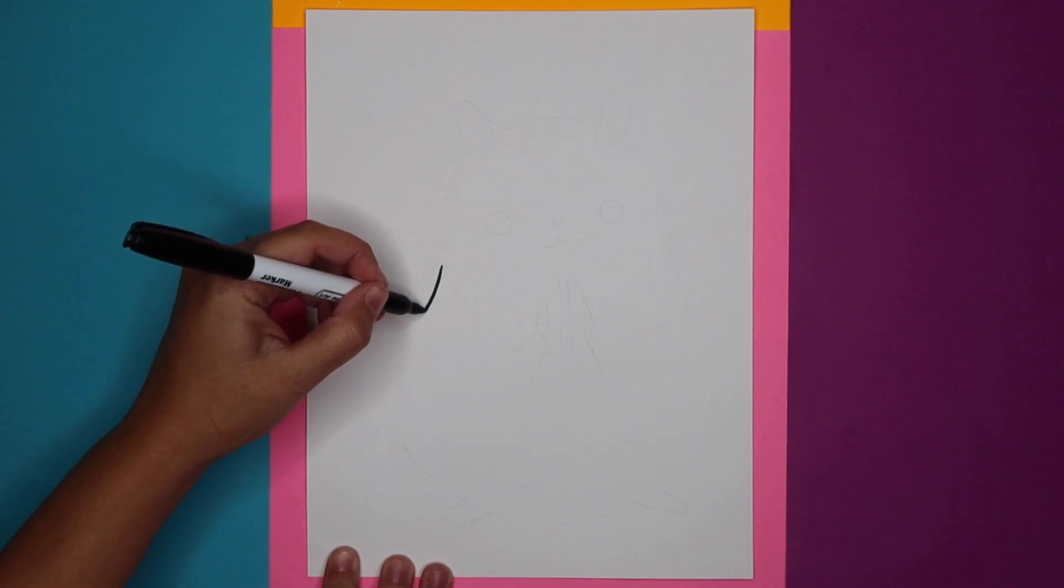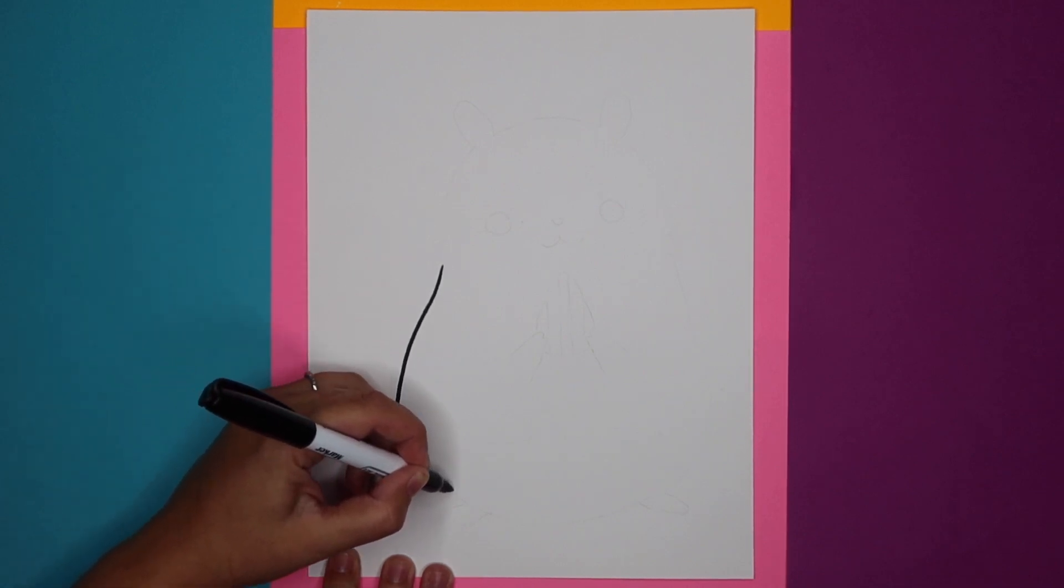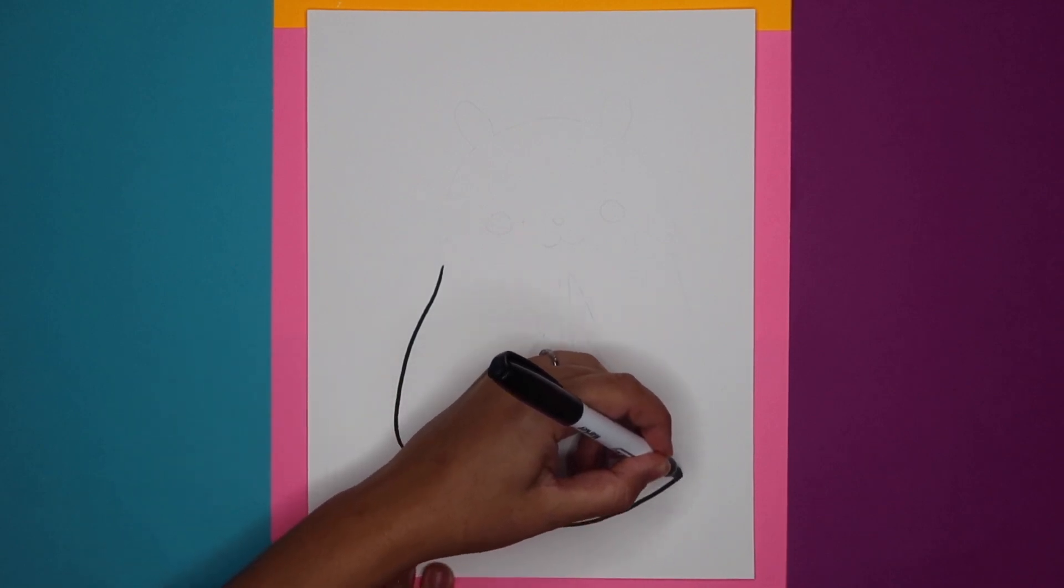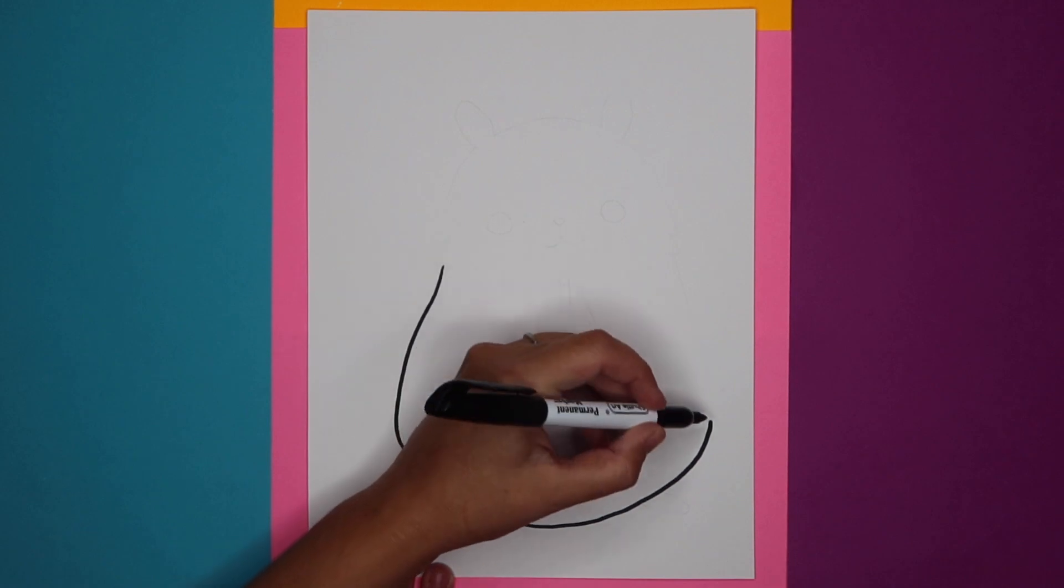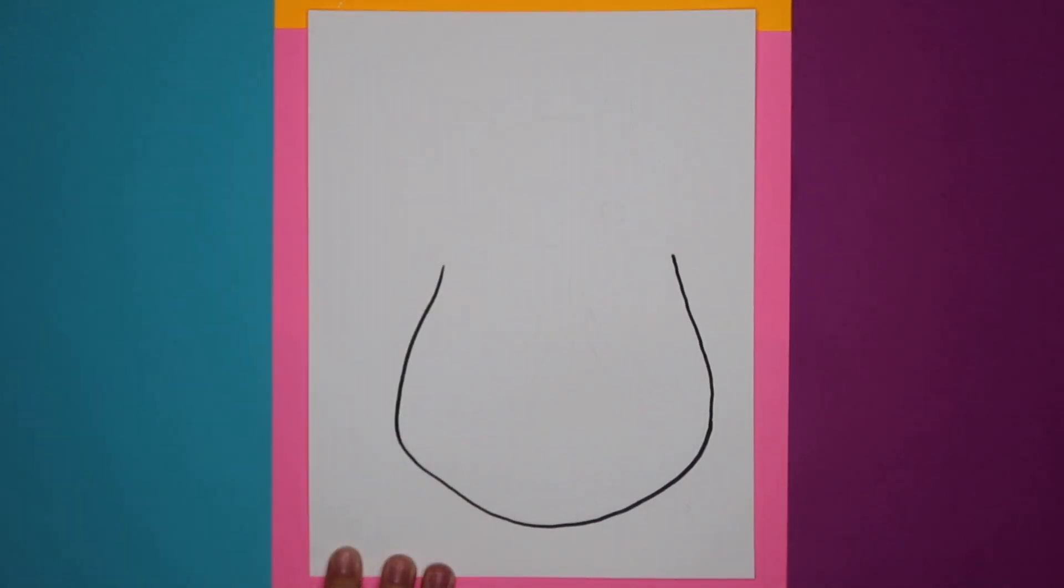Alright, let's get this hamster started. So the first thing we want to do is make our line look like this, a U. You're gonna go a little bit, there we go. Our line is complete.